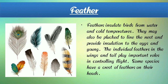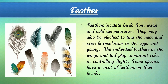Next, feather — F-E-A-T-H-E-R. Here we can see various types of feathers. Feathers are very light. Feathers insulate birds from water and cold atmosphere. They may also be plucked to line the nest and provide insulation to the eggs and the young. Individual feathers in the wings and tails play an important role in controlling flight. Some species have a crest of feathers on their head. Feather is very light — we all become as light as a feather.